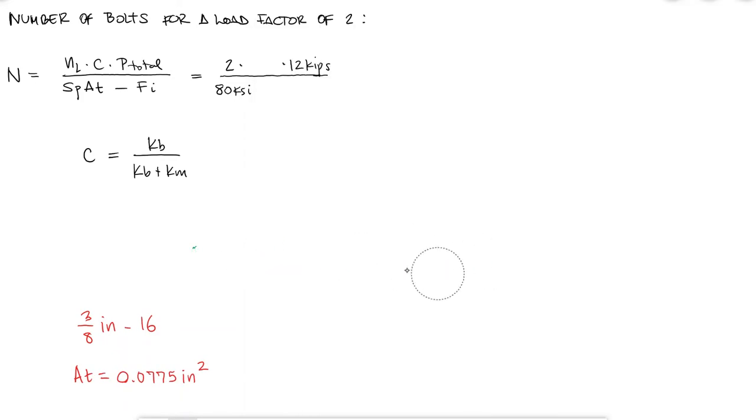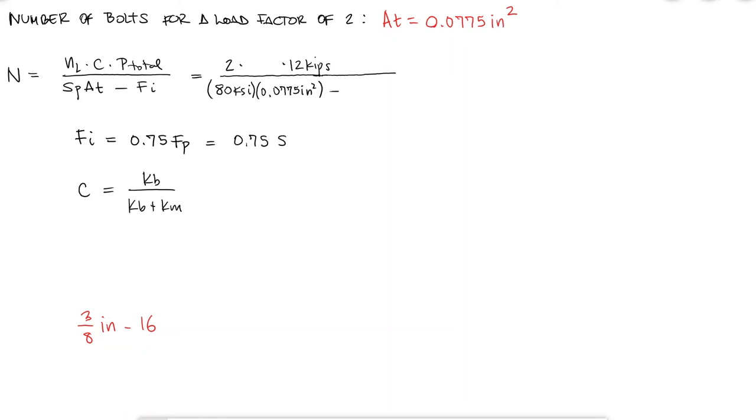And finally, for the preload Fi, I would like to be able to reuse the bolt and nut. Therefore, I'm gonna go with the recommended values for the preload and subject it to 75% of the proof load, which would be equal to 0.75 times the proof strength times the tensile stress area, following that stress is force over area, and therefore force is equal to stress times area.